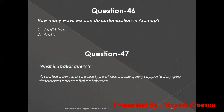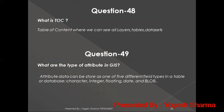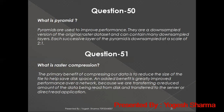How many ways can we do customization in ArcMap? Using ArcObjects and ArcPy. What is a spatial query? A spatial query is a type of database query supported by geodatabases and spatial databases. What is the TOC in ArcMap? TOC stands for Table of Contents, where we can see all layers, tables, and datasets. What are the types of attributes in GIS? There are many different types: character, integer, float, data blob, and text.